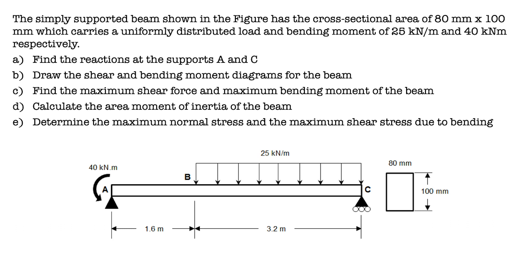The question is: the simply supported beam shown in the figure has a cross-sectional area of 80 times 100 mm, which carries a uniformly distributed load and bending moment of 25 kN per meter and 40 kN meter respectively. Find the reaction forces at supports A and C, draw the shear force and bending moment diagrams, find the maximum shear force and maximum bending moment, calculate the area moment of inertia, and determine the maximum normal stress and maximum shear stress due to bending.